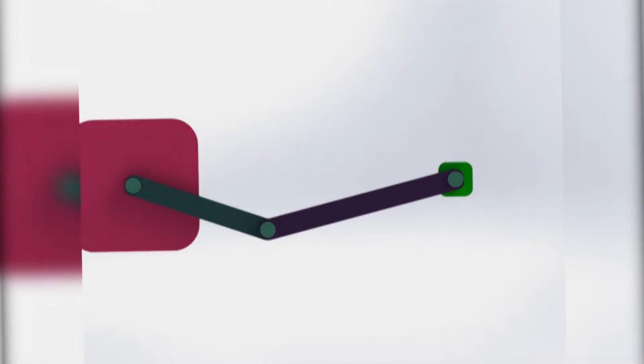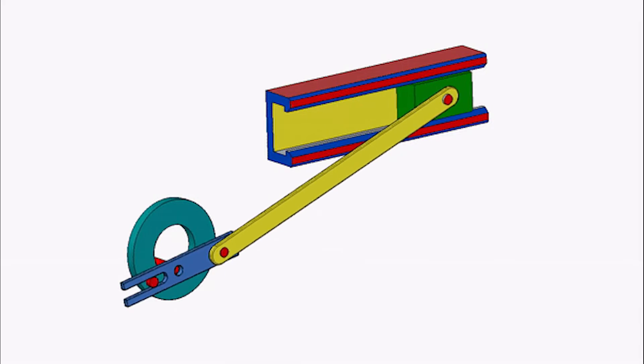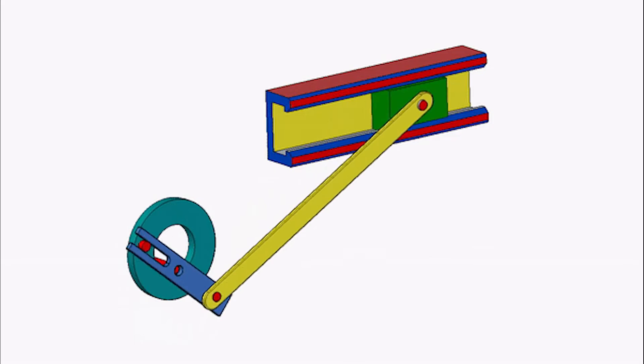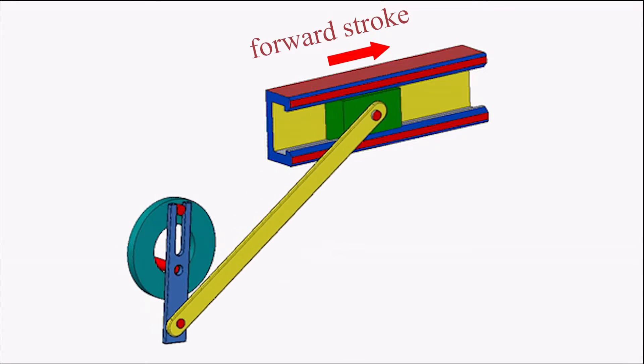The inline mechanism creates a symmetric cylinder movement back and forth, whereas the offset one has a non-symmetrical slider displacement that makes it move faster in one direction than the other. That's why it is called the quick return mechanism, in which the return stroke is quicker than the forward stroke.